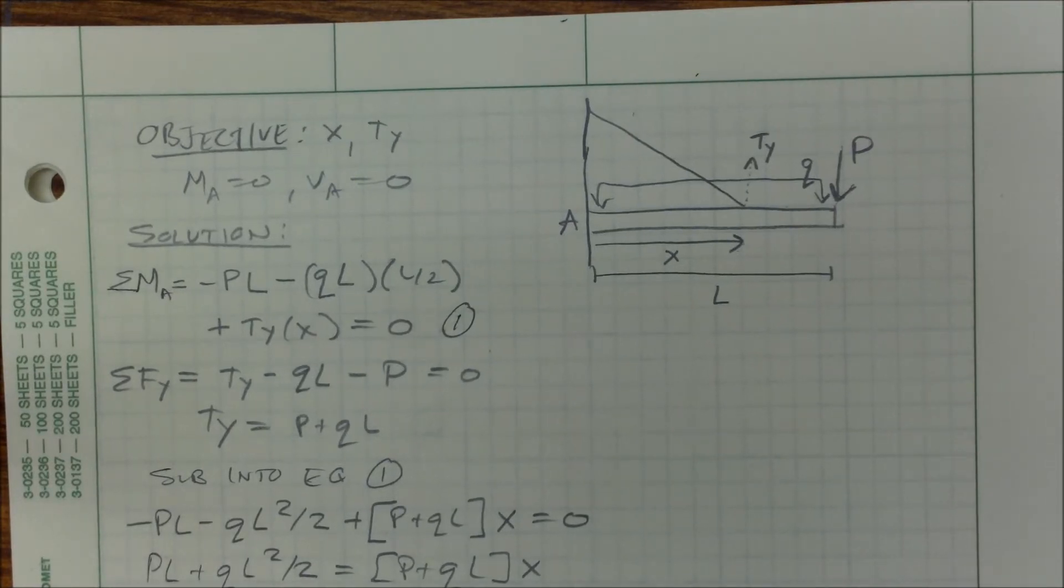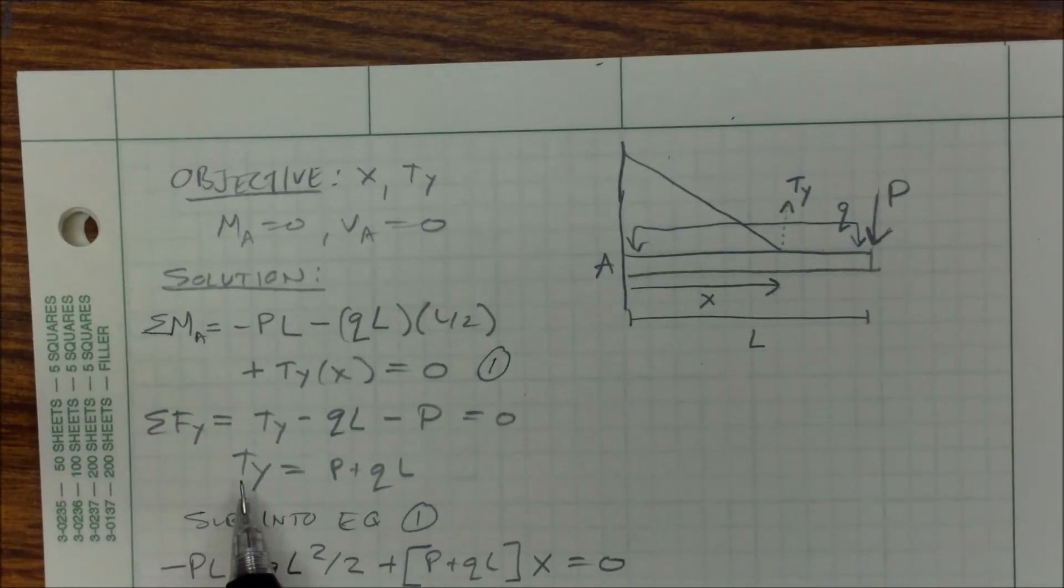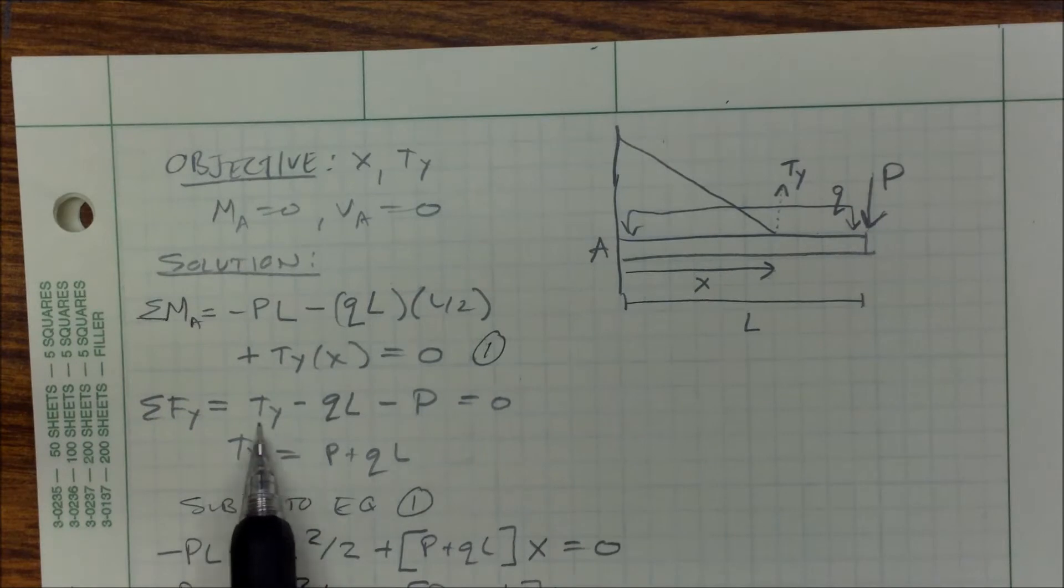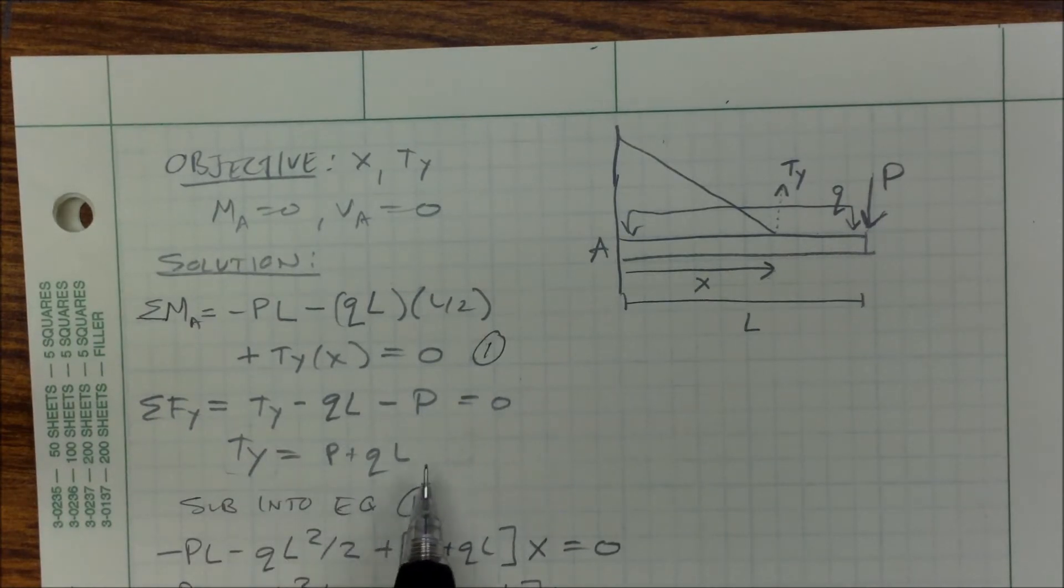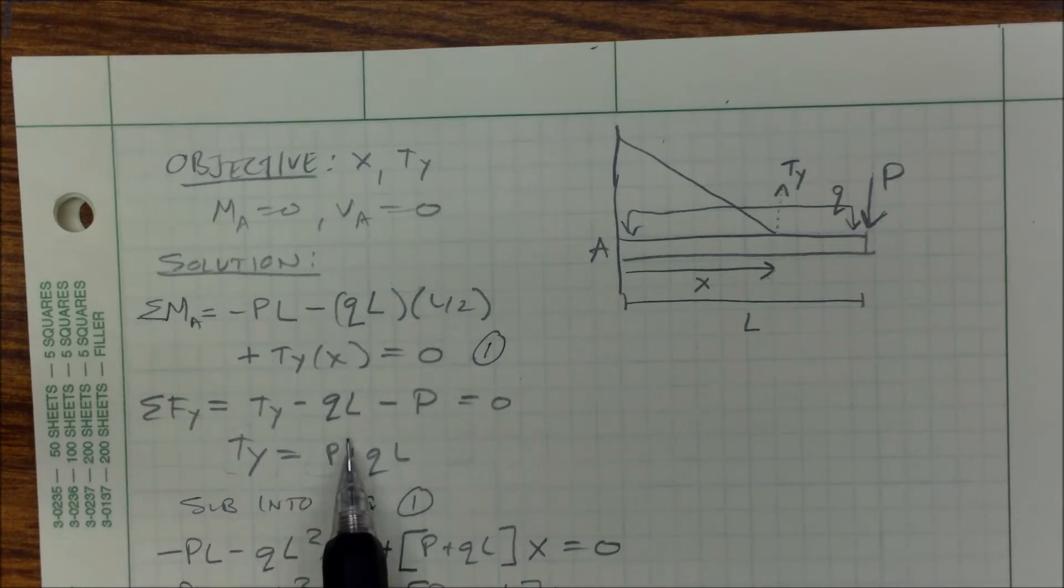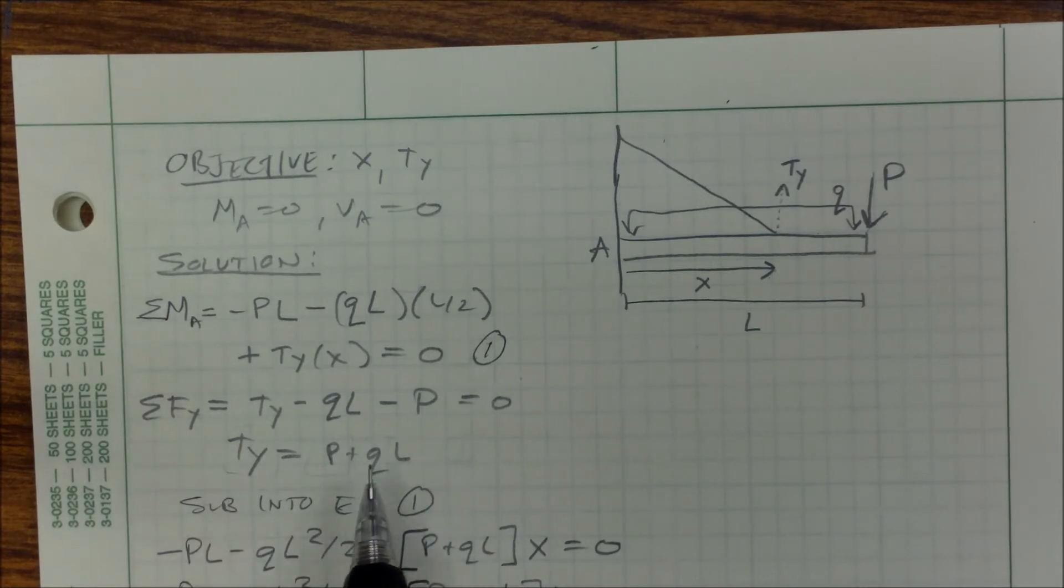Well, these symbols have representative units of either length or force. So TY, we would expect TY to be some kind of force. So everything here should equal the units of a force. P has units of a force. Q is force per length, but it's multiplied times length, so that's also force. That's a good way to check your answer, whether it's symbolic or numbers.